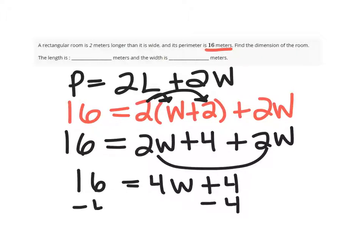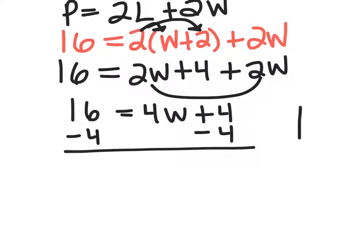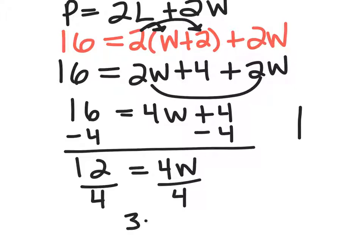Subtract the 4 on both sides. And we get 12 is equal to 4W. Divide both sides by 4. So 3 is equal to W.